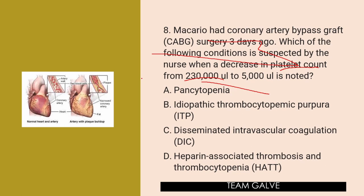The answer is letter D — heparin-associated thrombosis and thrombocytopenia (HAT). HAT may occur after CABG surgery due to heparin use during surgery. Although DIC and ITP cause platelet aggregation and bleeding, neither is common in a client after revascularization surgery. Pancytopenia is a reduction in all blood cells.